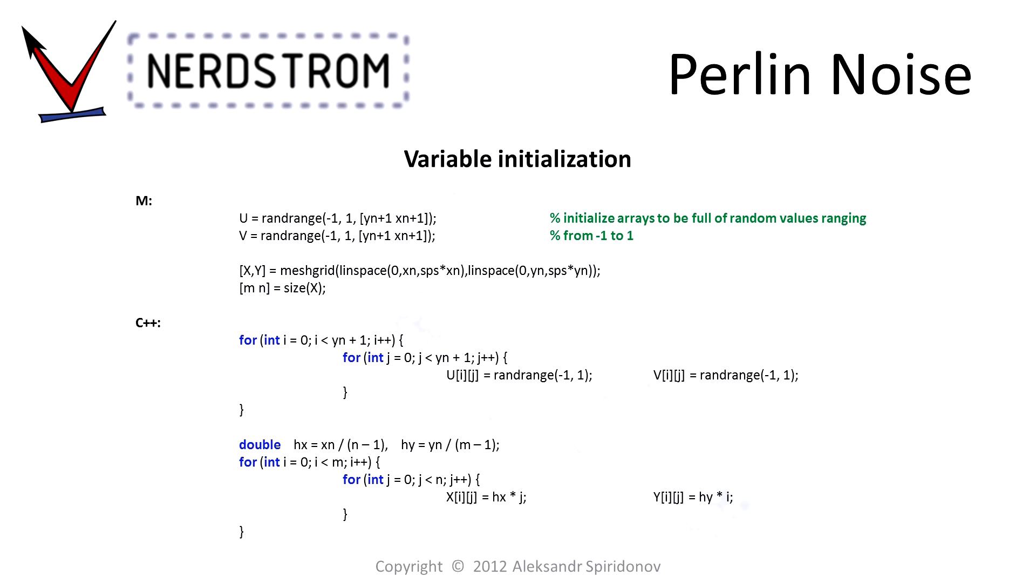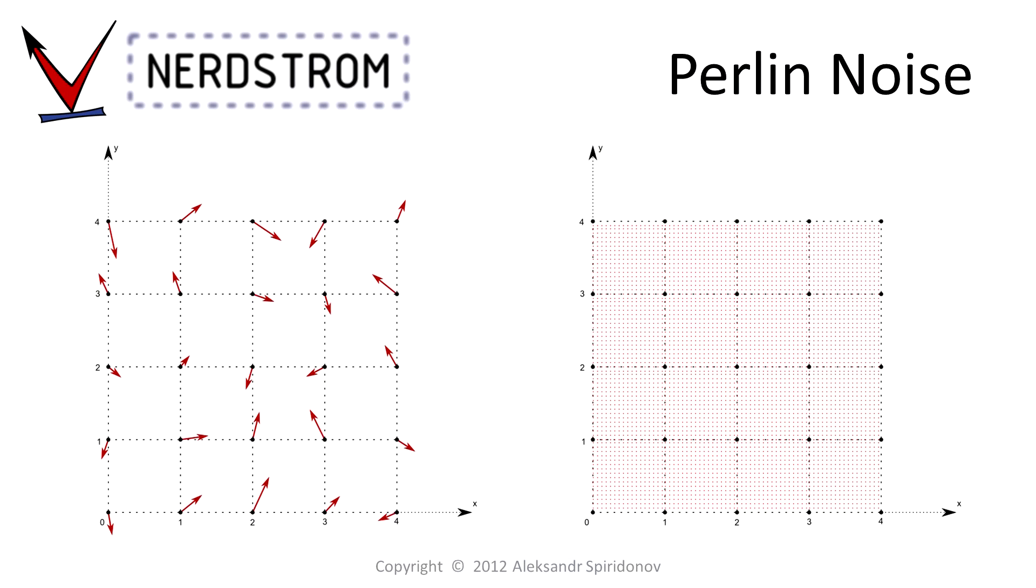Now, we are going to seed the gradient vectors and initialize the array of sample points. In both versions of the code, I am using a function called randrange, for random range, which outputs random numbers between a low and a high value specified by the user. In this case, minus one and plus one. This is a non-standard function, however, you should be able to write it fairly easily. I will include it when I post the code. Since C++ doesn't have a mesh grid function, I wrote a nested for loop, which does the same thing as the MATLAB version of the code. At this point in time, we have created a lattice of gradient vectors and created an array of sample points.